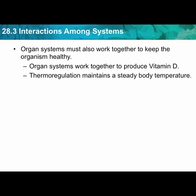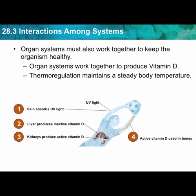Thermal regulation maintains a steady body temperature — too hot or too cold is not good; hypothermic and hyperthermic can both be fatal. Here we have an example where UV light from sunlight hits the skin, and the skin absorbs the UV light. Using that energy, the body begins to produce vitamin D. Some exposure to sunlight is good — it helps increase your vitamin D level. The liver then produces inactive vitamin D, which is a good step in the right direction, but it's not yet useful.